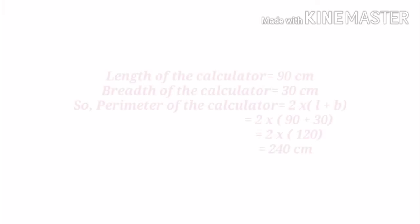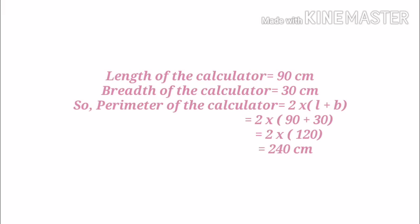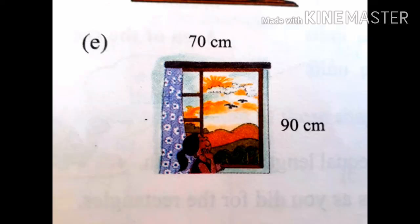Length and breadth are given, so we write: perimeter of the calculator = 2 into (L plus B). Putting in the values and solving, we get 240 centimeter. Please keep in mind that we solve the bracket first — the values inside are added, then multiplied by 2.